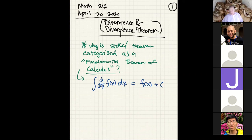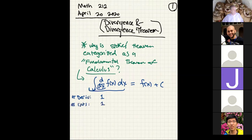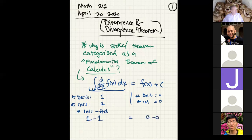The idea is that an integral and a derivative sort of undo each other. On the left-hand side, the number of derivatives is one and the number of integrals is one. On the right-hand side, you have zero derivatives and zero integrals. A conserved quantity is: the number of integrals minus the number of derivatives is the same on both sides — one minus one equals zero minus zero.